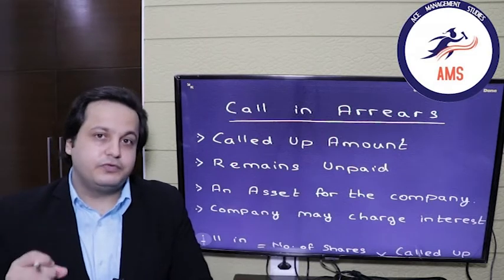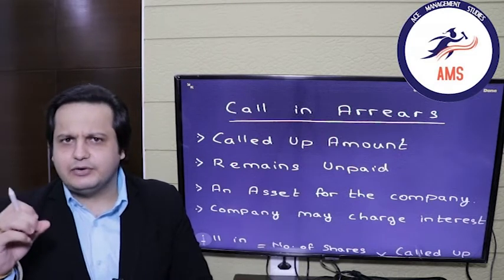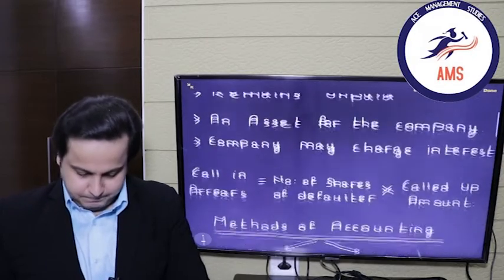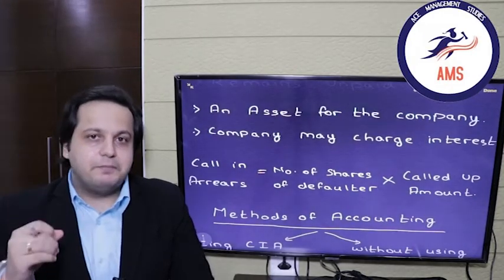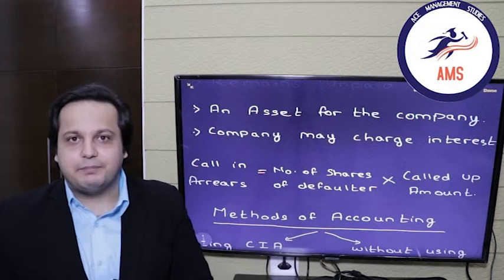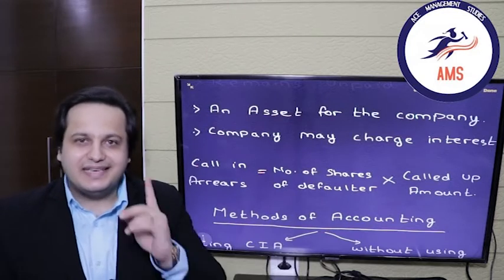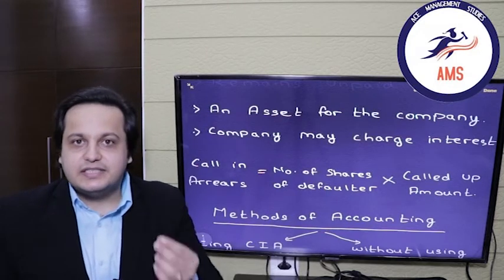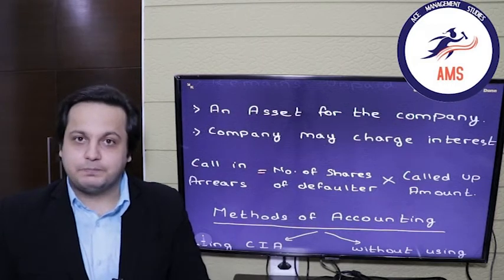Now let's move towards the formula. What is the formula for calculating the call-in arrears amount? The formula is: the number of shares of the defaulting party multiplied by the called up amount. This is how you will calculate the call-in arrears amount.